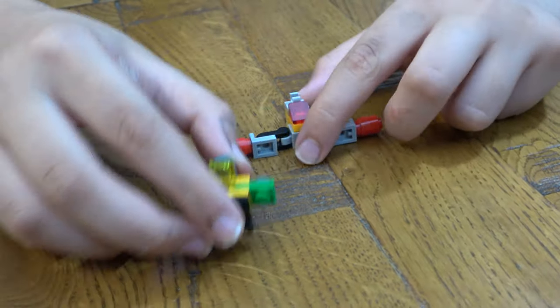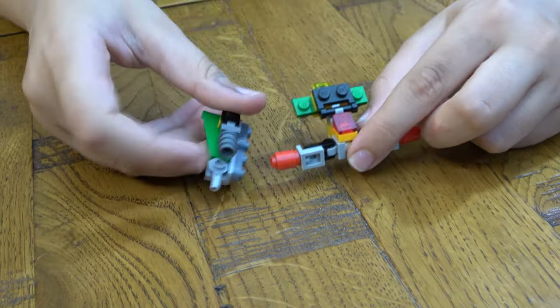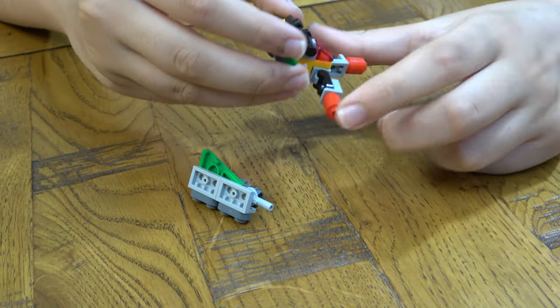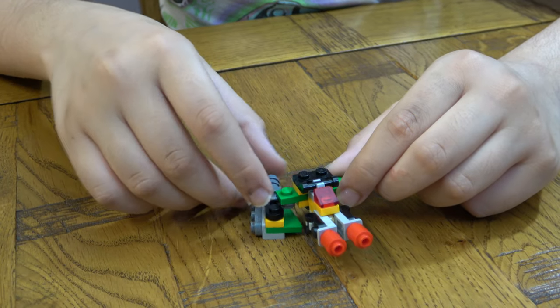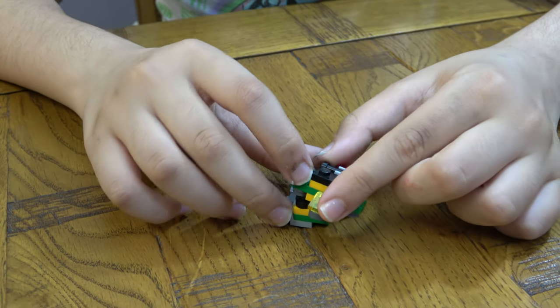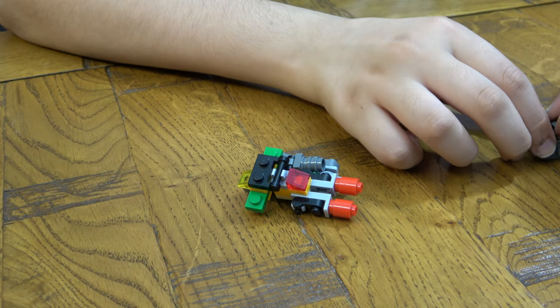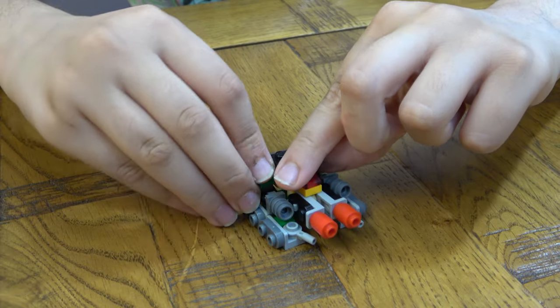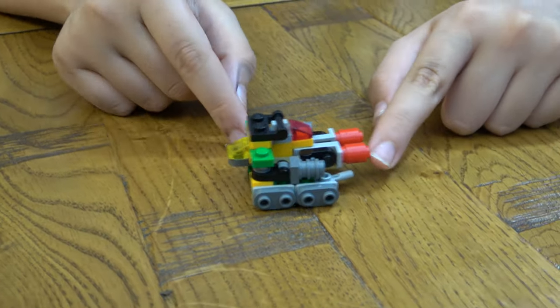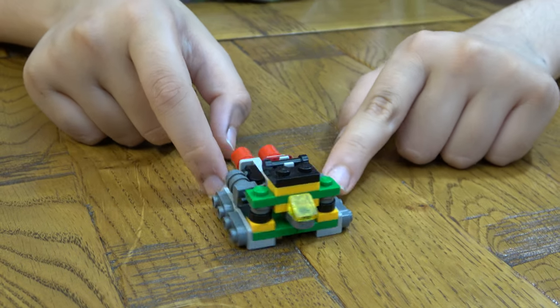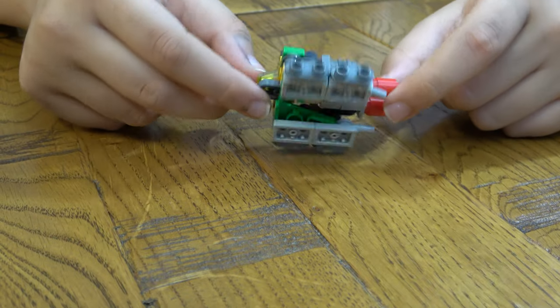So now let's put them all together. We're going to get this here and then the legs like that. And then this one here is the finished tank transformer. Here it is. Here's the back.